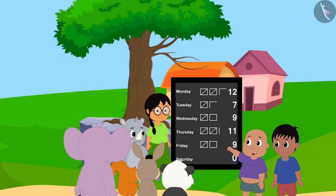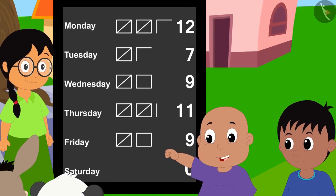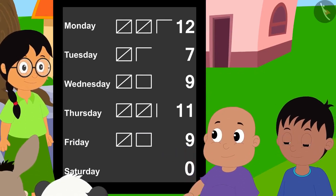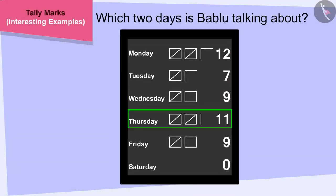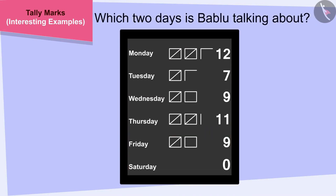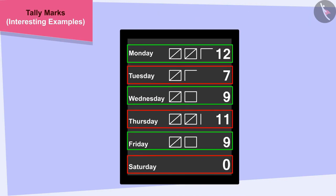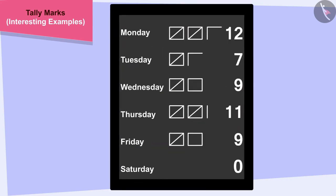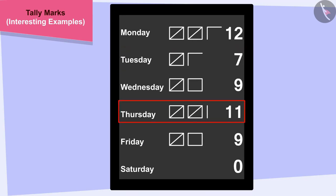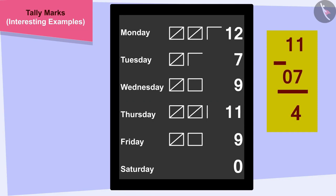On this day, four more hours of work were completed than another day, Bablu told Raju. Can you tell which two days Bablu is talking about? To find a solution, we have to find two days where the difference between the hours of work completed is 4. We will find that 7 hours of work were completed on Tuesday and 11 hours on Thursday, which is 4 more than 7. So, Bablu is talking about Tuesday and Thursday.